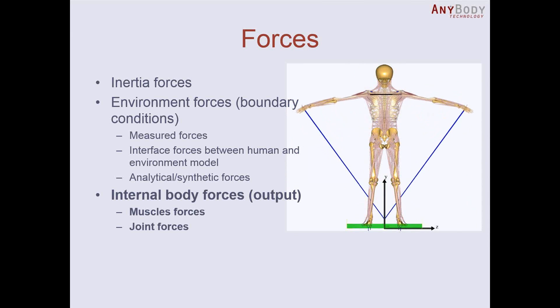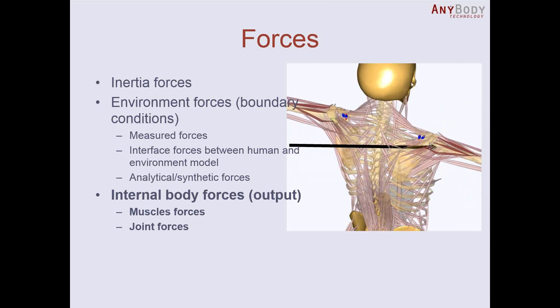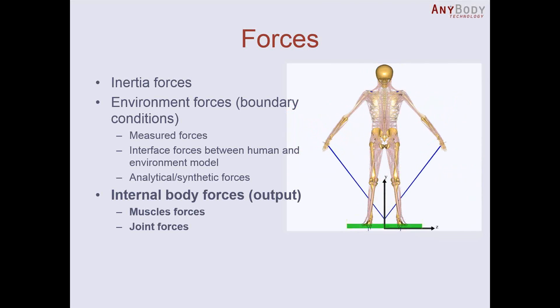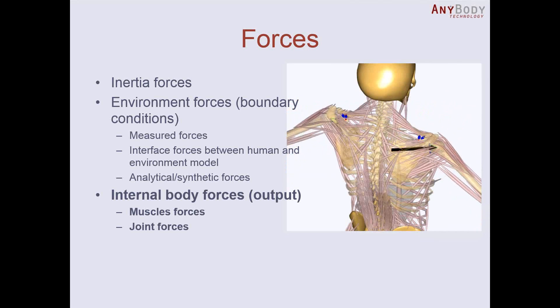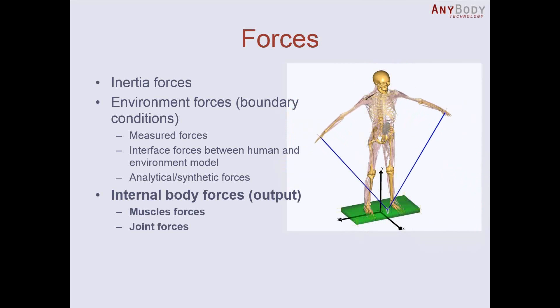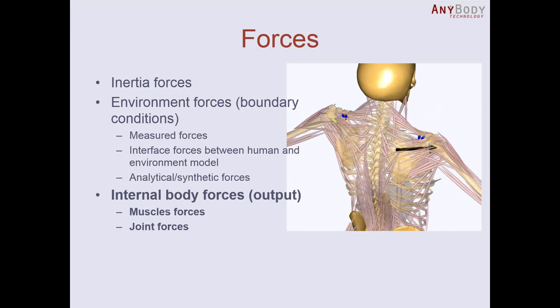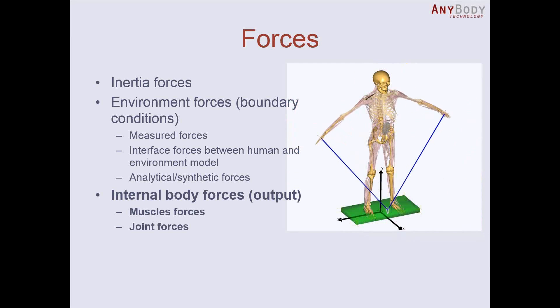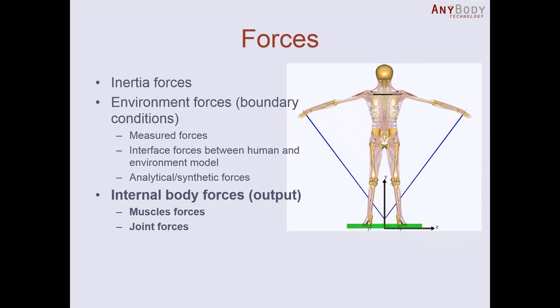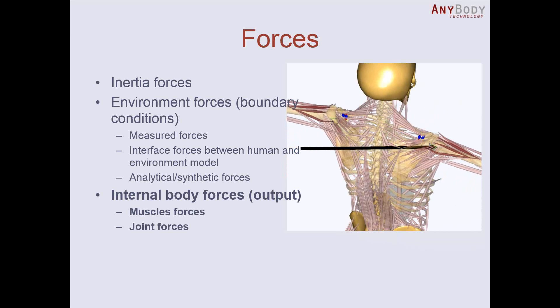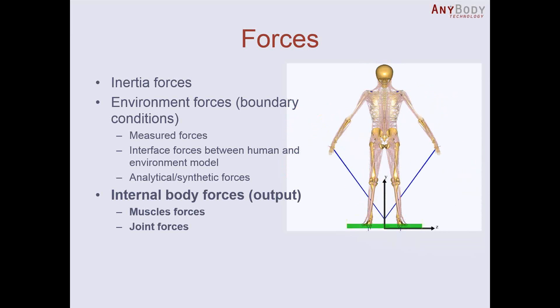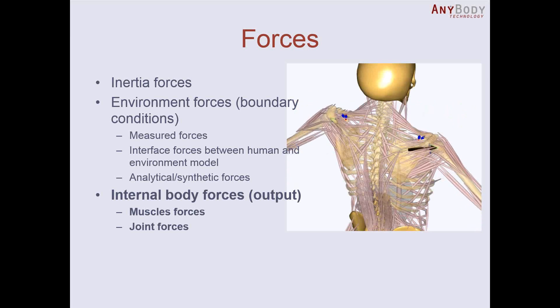This video shows an elastic band exercise. Notice here the black line displayed in the glenohumeral joint. This vector represents the size and direction of the reaction force in the glenohumeral joint. Notice here how this joint reaction force is not much related to the direction of the band, but rather, primarily, the direction is primarily muscle induced.